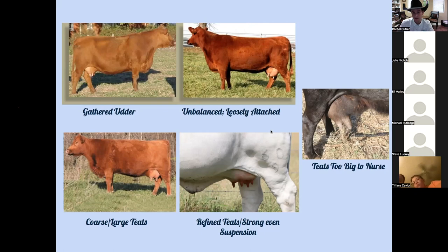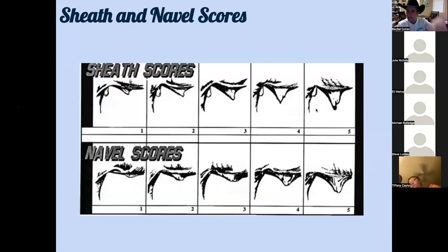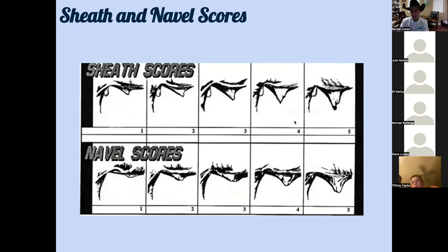Sheath scores run from 1 (most ideal) to 5. We look at both descent - how low the sheath hangs - and angle. We want the sheath pointing more forward rather than pendulous and pointing toward the ground. A tidy sheath with a slight forward angle makes it easier to get cows bred and far less likely to catch on something and cause injury. Navel scores similarly correlate to sheath quality in offspring as discussed.